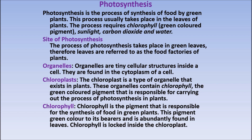Site of photosynthesis: the process of photosynthesis takes place in green leaves. Jo photosynthesis hota hai, wo kahan hota hai — green leaves mein hota hai. Therefore, leaves are referred to as the food factories of plants. Isliye, leaves ko hum food factory kehte hain — food banane ki factory hai plants ke. Jo process photosynthesis hota hai wo hare patto mein hota hai, isliye hum leaves ko food factory of the plants bhi kehte hain.